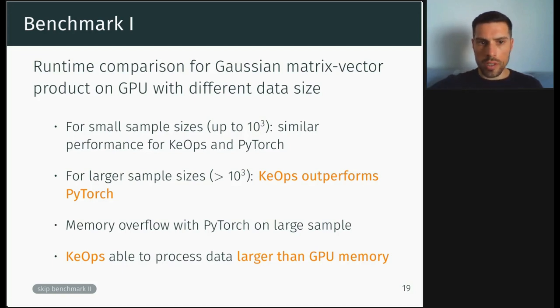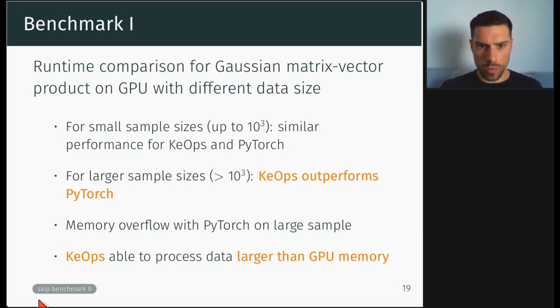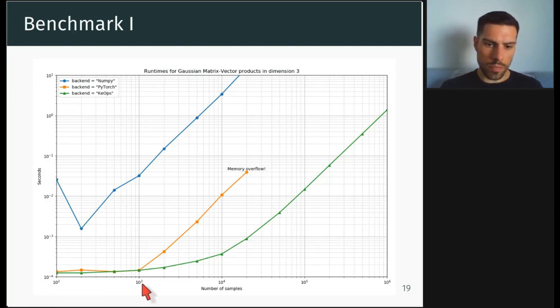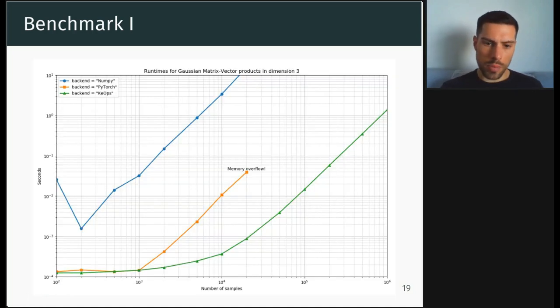So I have a small example of a benchmark to compare some computation time between KeOps and PyTorch to do some Gaussian matrix vector products on a GPU with different data size. So here, basically, are the results. Here you have the data size, and here you have the runtime. The first point is that for small sample size up to thousands, you have a similar performance between PyTorch and KeOps. But for larger sample size, bigger than thousands, KeOps, here in triangle, will outperform PyTorch, here in square.